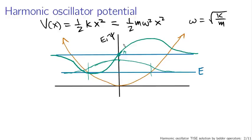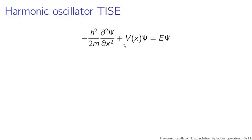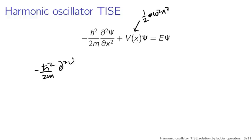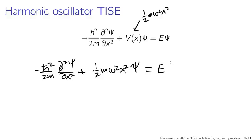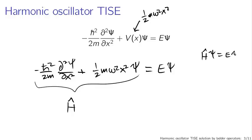To set that up, let's go back to the time-independent Schrödinger equation. Substituting in the harmonic oscillator potential, one-half m ω² x², the harmonic oscillator time-independent Schrödinger equation is: −ℏ²/2m times the second derivative of ψ with respect to x, plus one-half m ω² x² ψ, equals E ψ. This expression in brackets is the Hamiltonian operator Ĥ, and the equation is often written simply as Ĥψ = Eψ.